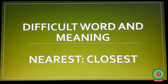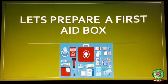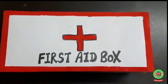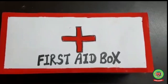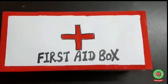Students, in case of serious injury you should always remember the helpline number of ambulance, that is 102 or 108. As we all know, accidents can happen anytime or anywhere, so let's prepare a first aid box. Students, you should always keep a first aid box at home.